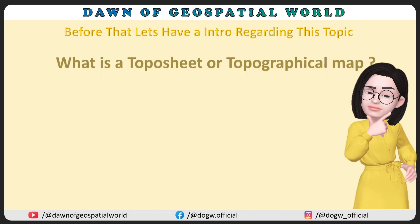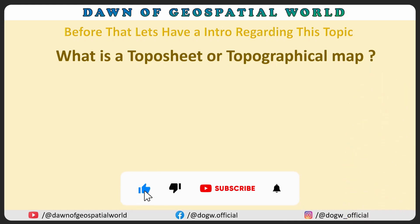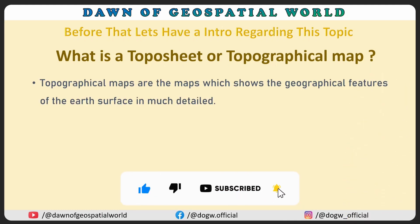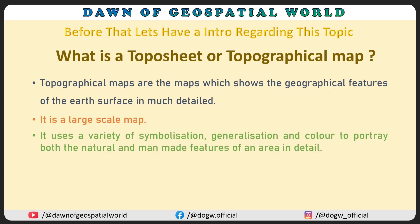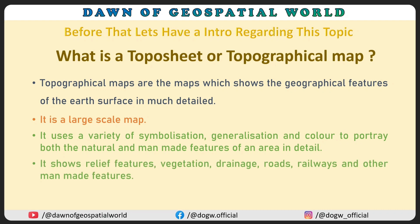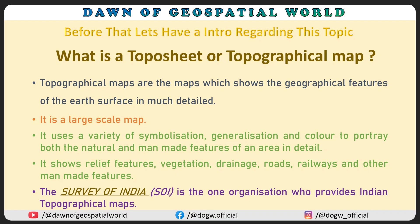What is a topo sheet or topographical map? Topographical maps are maps which show the geographical features of the earth's surface in much detail. It is a large-scale map that uses a variety of symbolization, generalization, and color to portray both the natural and man-made features of an area in detail. It shows relief features, vegetation, drainage, roads, railways, and other man-made features. The Survey of India is the organization that provides Indian topographical maps.